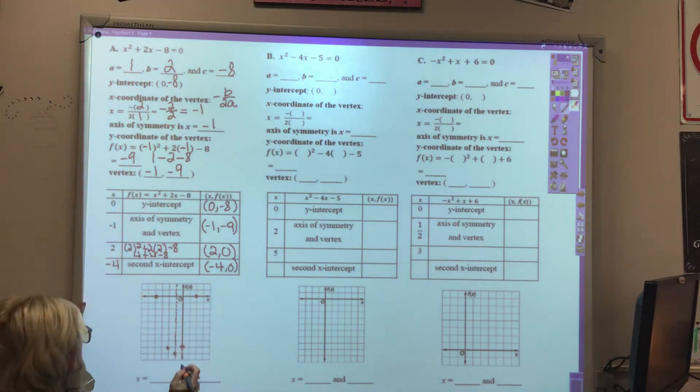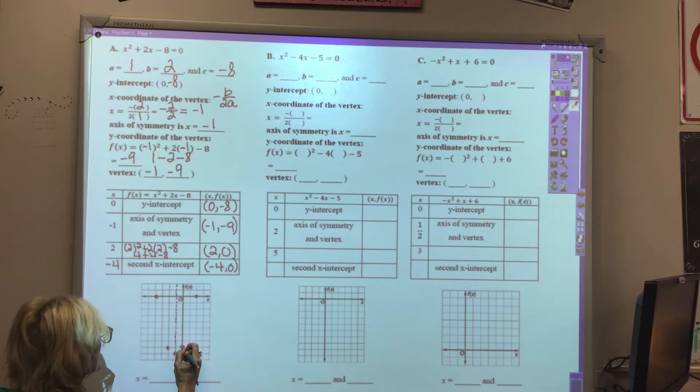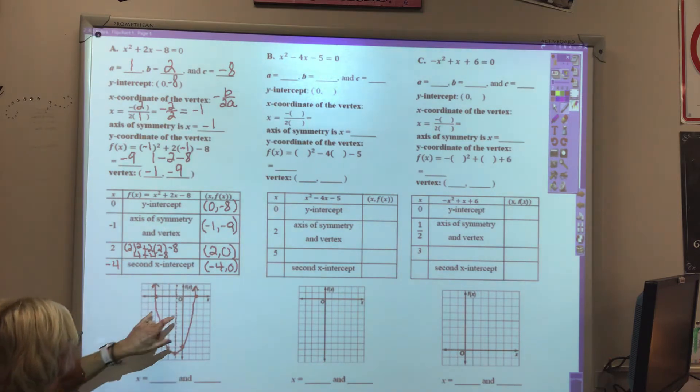We would graph the function, and those solutions are where we cross the x-axis. So that was at x equals 2 and negative 4.